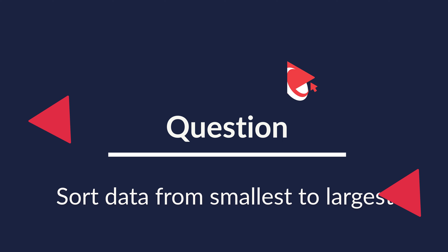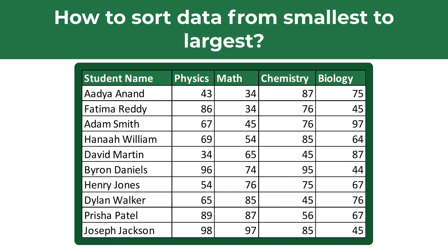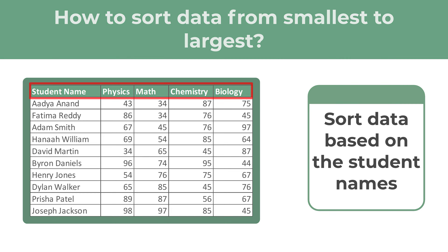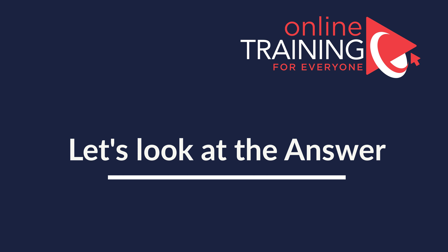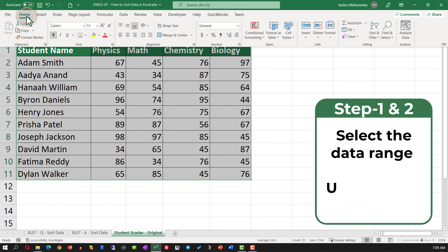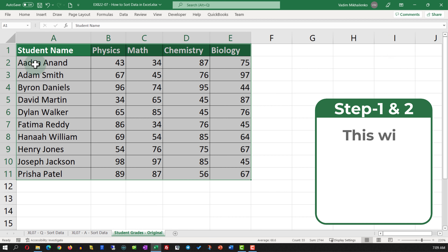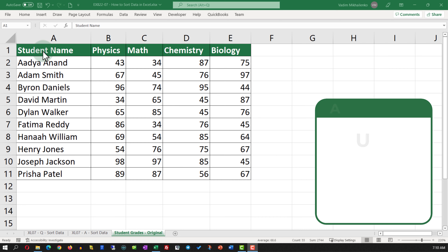A lot of times you might get a question on how to sort data in Excel from smallest to largest. For example, you might be presented with a data set showing student names and their grades in physics, math, chemistry, and biology, and you need to sort this data set based on the student names. To accomplish this task, select the data set and in the Home tab use the sort option, which will rearrange the data in alphabetical order based on the student name.